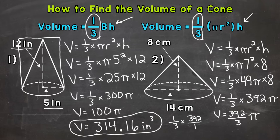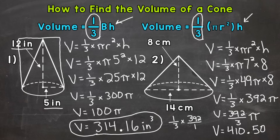Now we're going to calculate this and put it in decimal form by doing 392/3 times pi. I'm going to use the pi button on a calculator. If you're using the approximate or rounded version of pi, 3.14, your answer is going to be slightly different than mine. So once we plug this in, we will get an answer of 410.50 — I'm rounding the decimal to the nearest hundredth. And this is centimeters cubed. So our volume is 410.50 centimeters cubed.